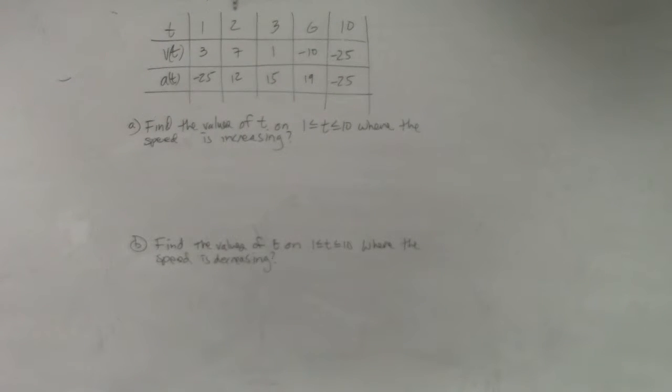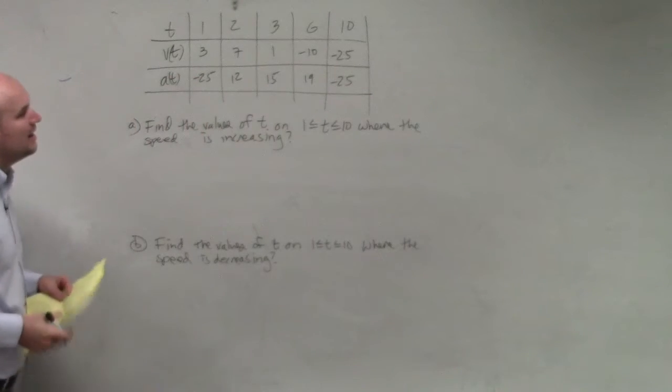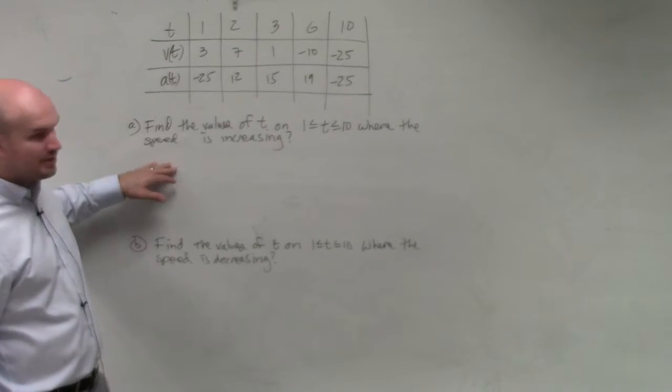So let's go and look at increasing, then I'll have you guys, then I'll do the formal. So if we're looking for the value of t in which on the interval of 1 is less than or equal to t, which is less than or equal to 10, where the speed is increasing.